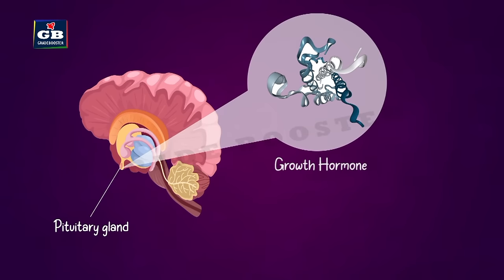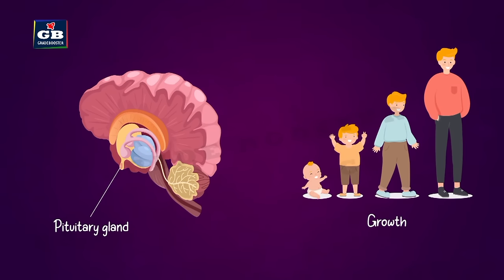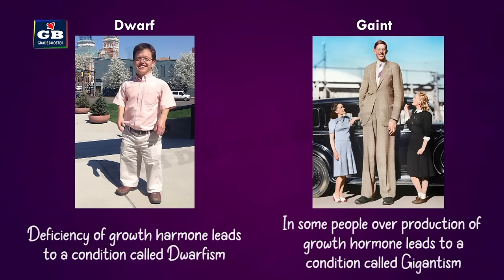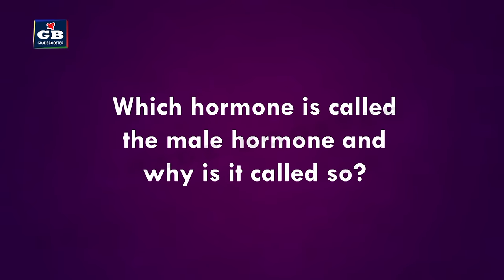Growth hormone, secreted by the pituitary gland, is responsible for the regular growth of the body, including skeletal muscles and bones. Deficiency of growth hormone leads to dwarfism, where stunted growth is observed. Overproduction of growth hormone leads to gigantism, where people grow very tall and appear unusual.